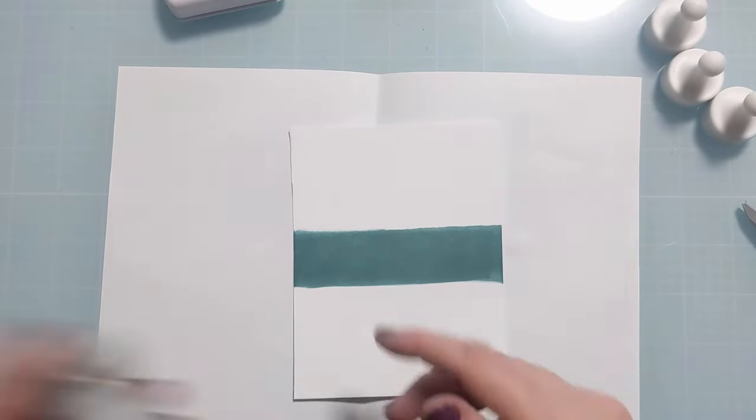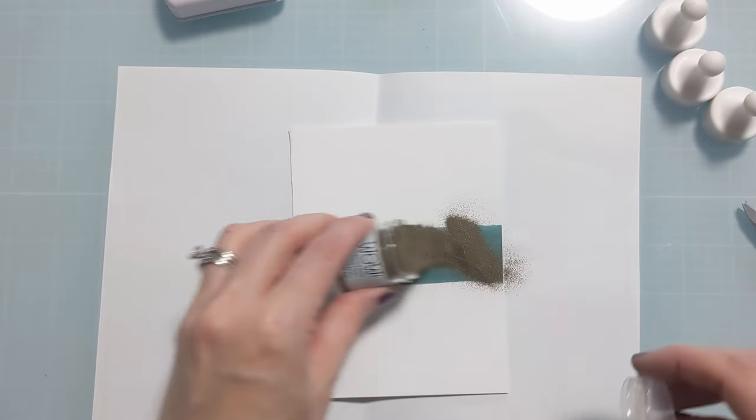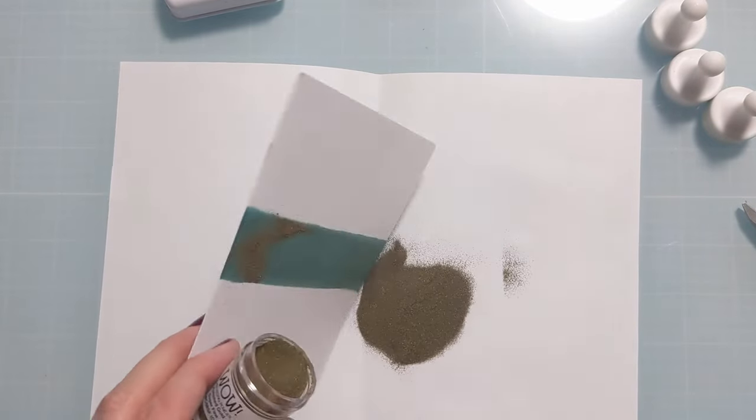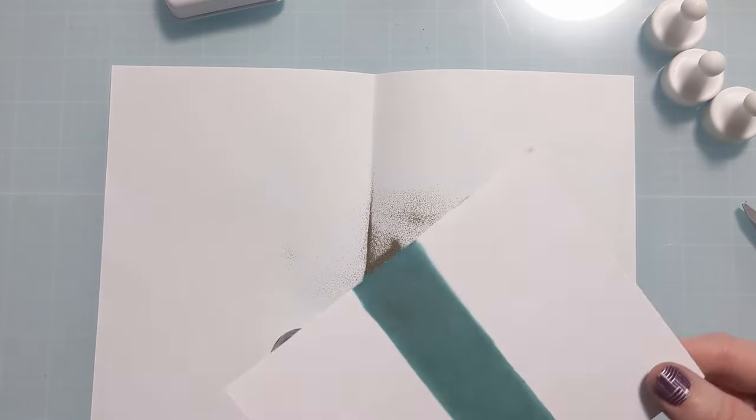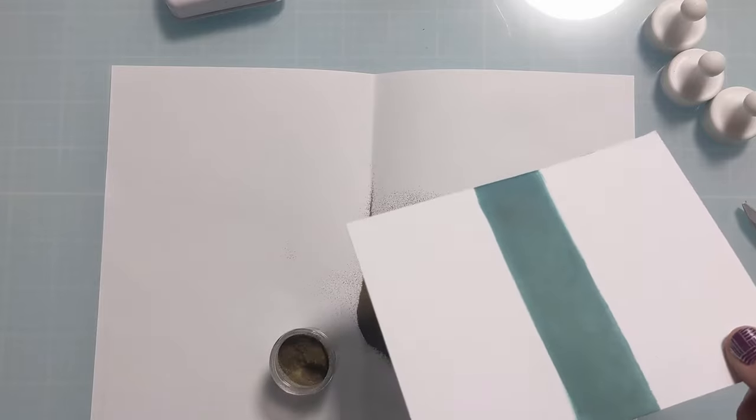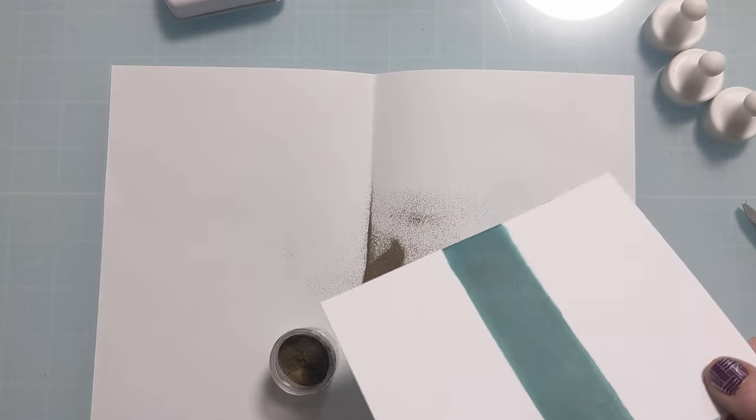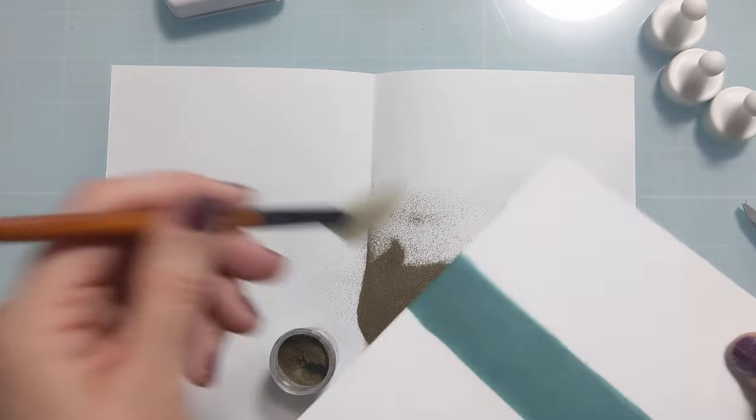Now you can kind of see what I'm doing here I just made a strip on a scrap piece of paper and I'm just dumping this gold embossing on it because I want to see if it's dry and as you can see it's not. So I'm going to brush that off and hit it again with my heat tool just to make sure that this ink is fully dry before I move on to the embossing step.